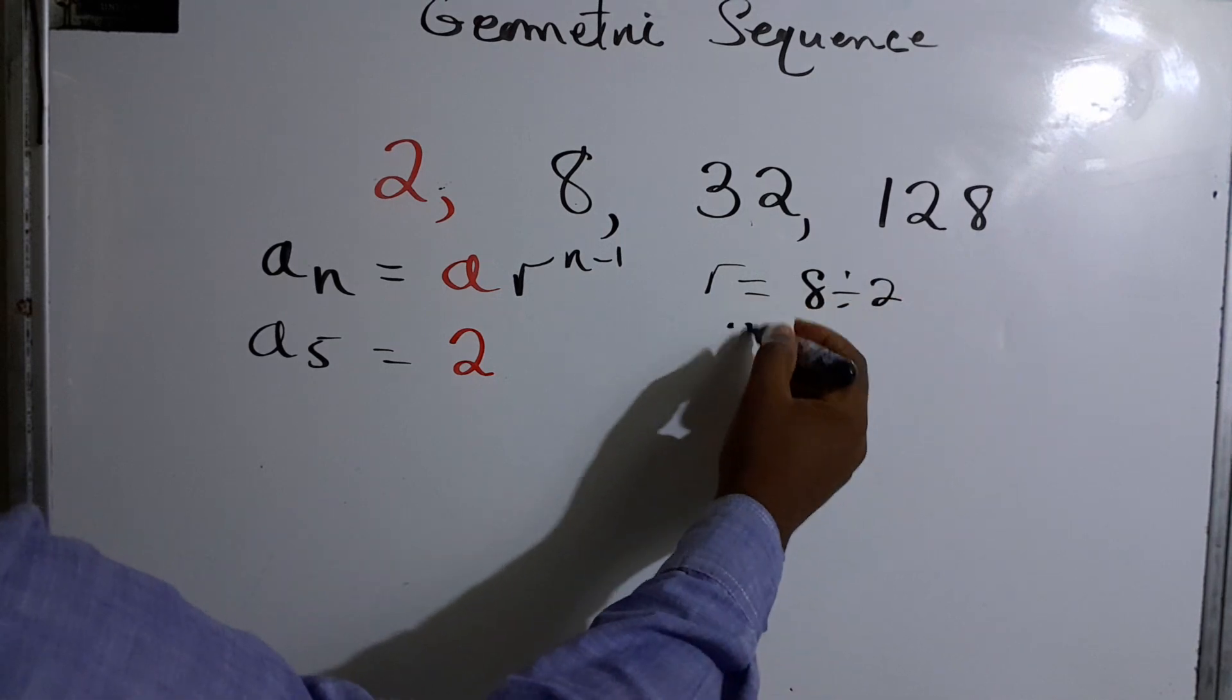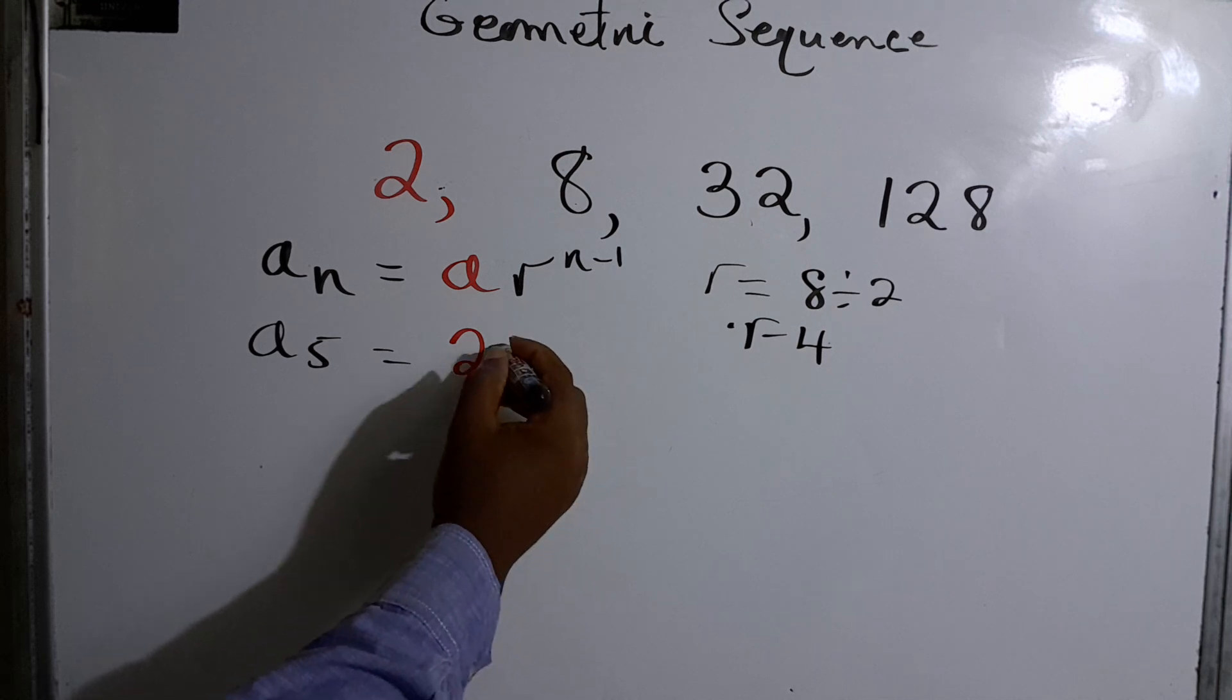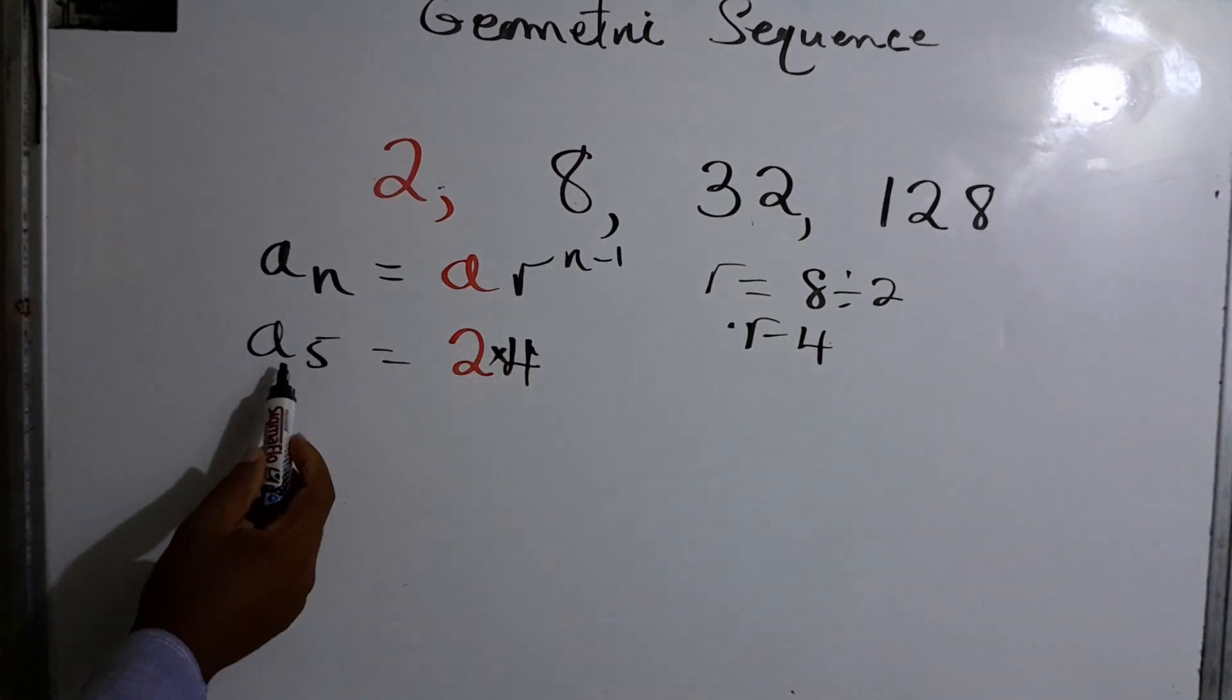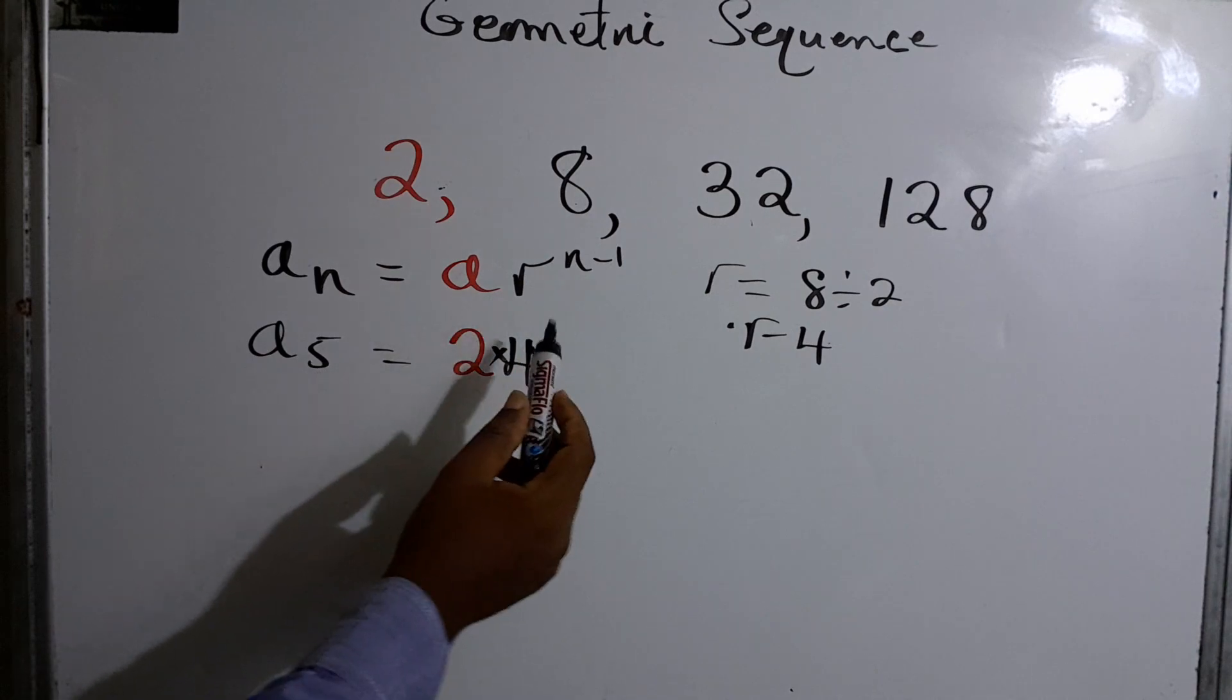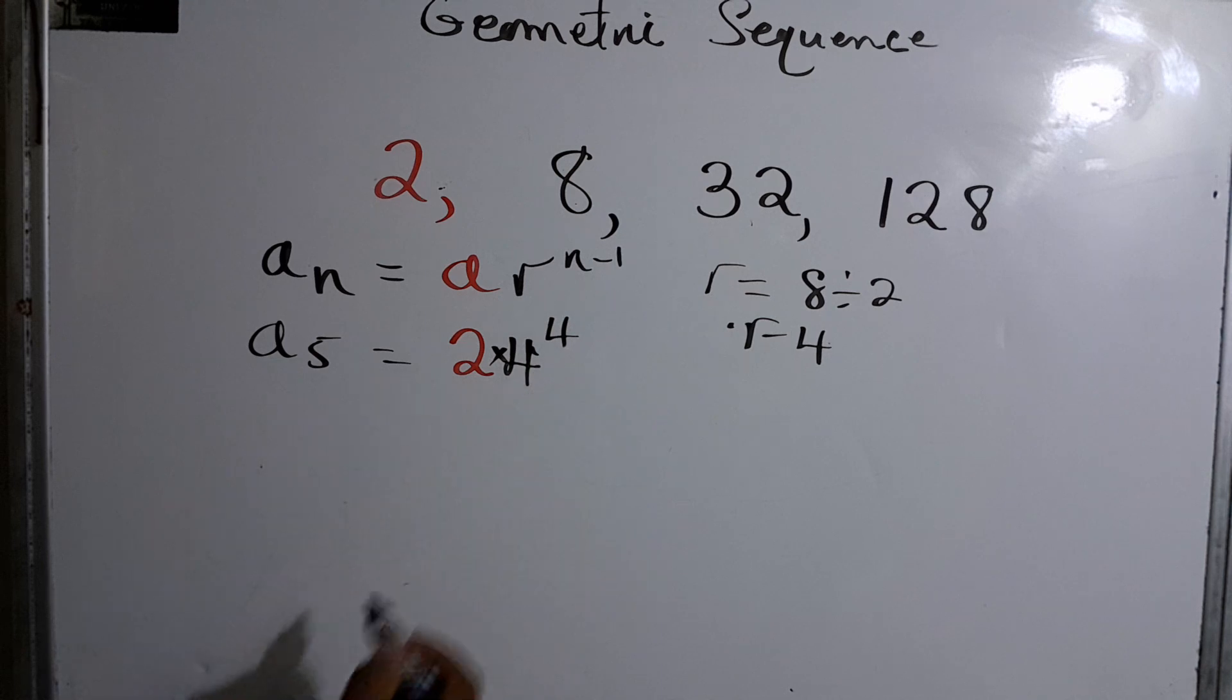R would be eight divided by two, so the common ratio would be four. So what we do with four, of course this is times, and then n minus one. So n will be the fifth term minus one, so it would be five takeaway one, which is to the fourth.